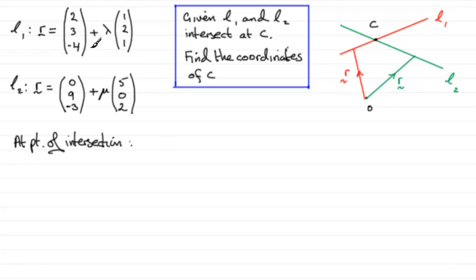So, if I was to expand these two vectors and add them together, I've got two plus lambda, and then for the J component, three plus two lambda, and for the K component, minus four plus lambda. Then this vector must be equal to the same thing when I do it for the vector for any point on line L2.